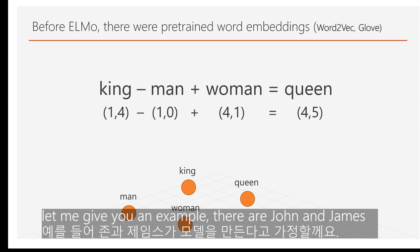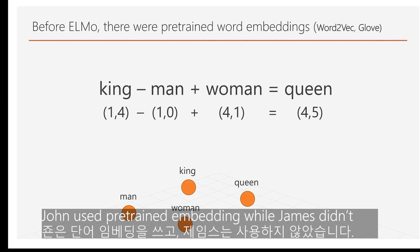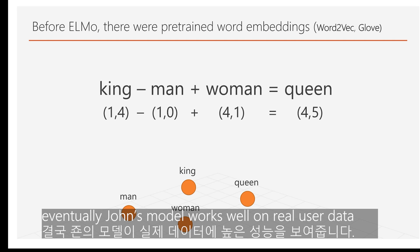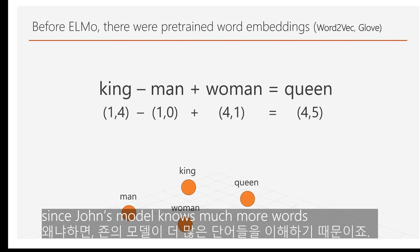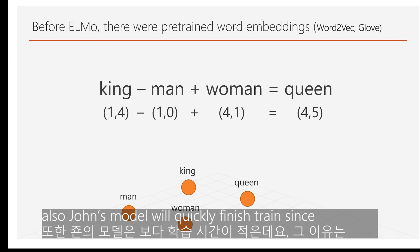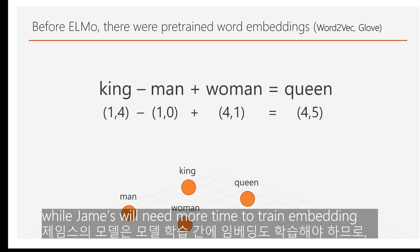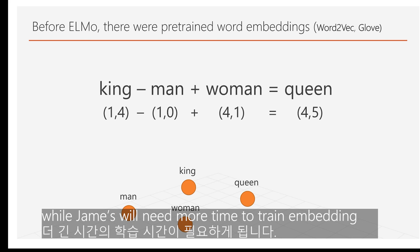These pre-trained word embeddings help a lot on NLP tasks that don't have enough data for training. For example, suppose John and James are both building a sentence classification model with limited training data. John used pre-trained word embeddings while James didn't. John's model classifies well on real user data since it knows many more words, while James's model mostly can't handle unseen words. Also, John's model will finish training quickly since his embedding layer is almost perfect from the beginning, while James's model will need many more epochs.